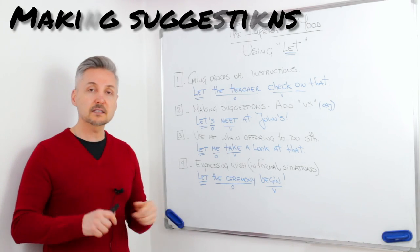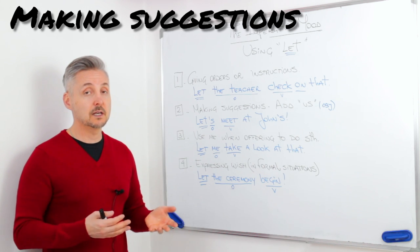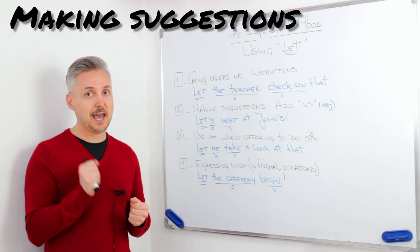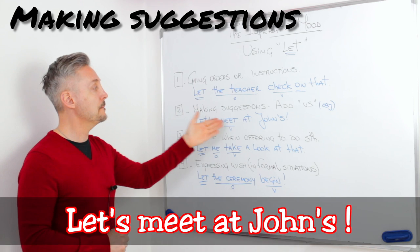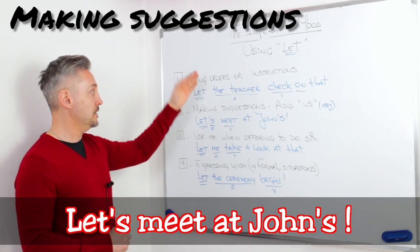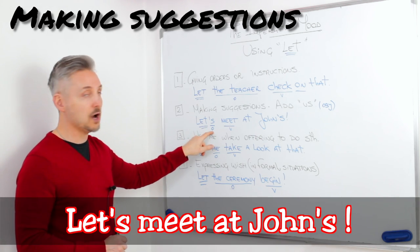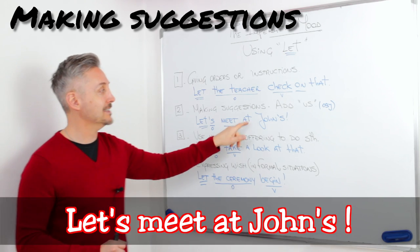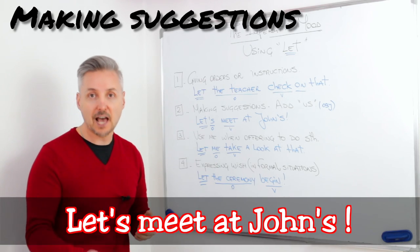In the second situation, making suggestions. And in this case, we add us, which is the object. Sometimes, we like to contract it with apostrophe s. Just like my example. For example, let's meet at John's. Let is the verb. Us, apostrophe s, is the object. Then, the verb, again, meet at John's. At John's means at John's house.